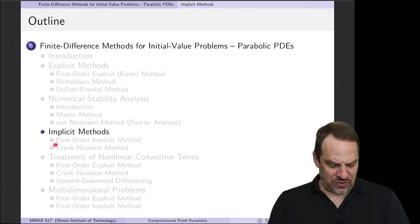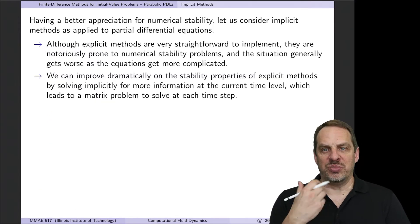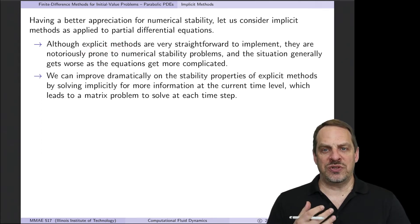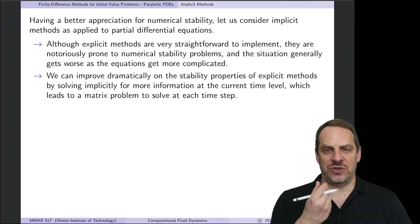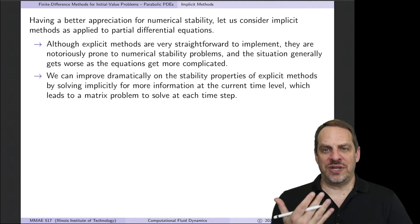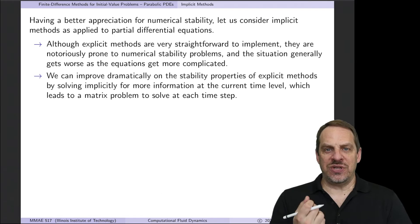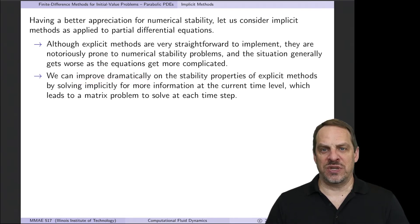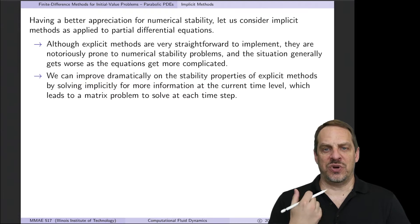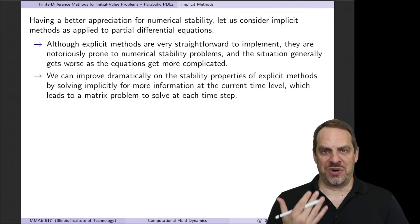We're going to look at two methods: the first-order implicit method and then the Crank-Nicholson method. In our previous videos, explicit methods are very straightforward to implement, but they're notoriously prone to numerical stability issues. We often have a criteria on the time step that has to be small enough in order to prevent numerical instability. We'd like to mitigate that using implicit methods, which turns out to be a rather dramatic improvement, as we'll see, using our 1D unsteady diffusion equation as a model problem.